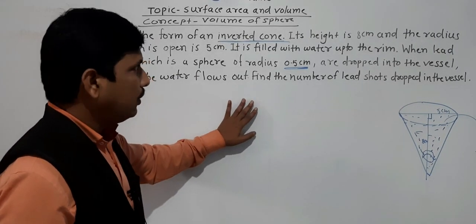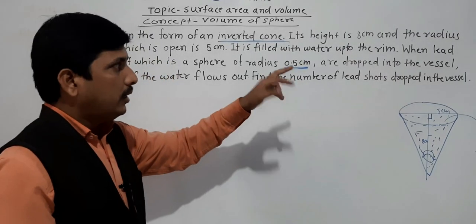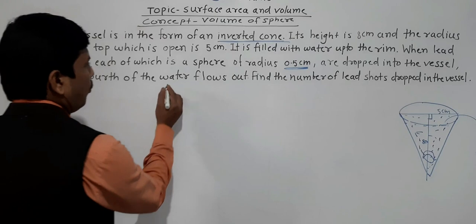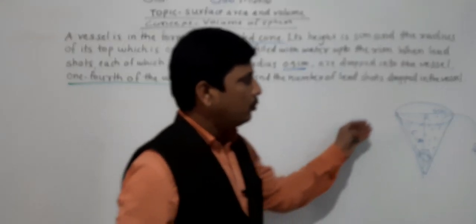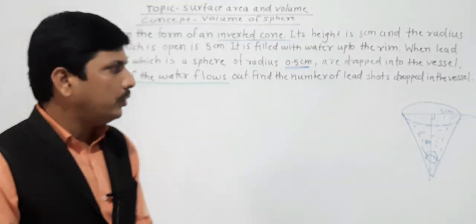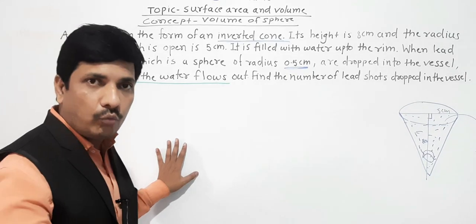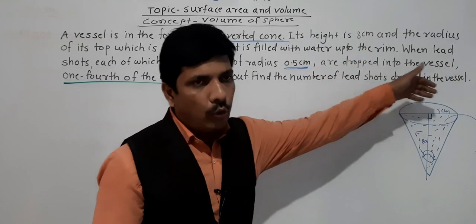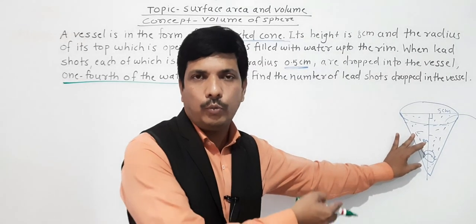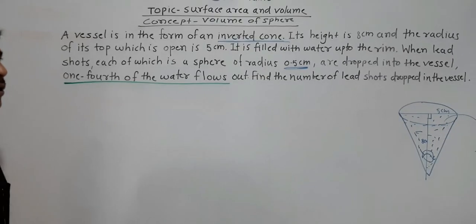One more thing is given: it is filled with water up to the rim, and when lead shots are dropped into the vessel, one fourth of the water flows out. Whatever volume of water flows outside, that volume equals the volume of the spheres. So we will find one fourth of the vessel volume, then find volume of a sphere, then divide — that gives us the number of lead shots dropped.